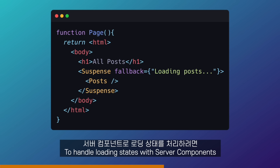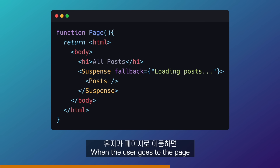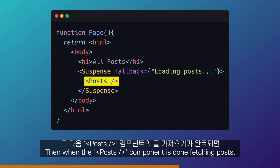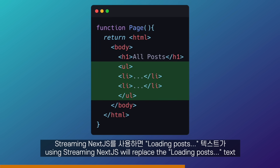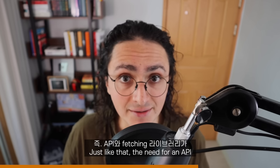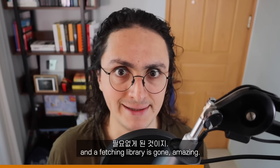To handle loading states with server components, we can use Suspense. When the user goes to the page, they will immediately see a UI with a loading post text. Then when the post component is done fetching, using streaming, Next.js will replace the loading post text with the resulting UI of the post component. Just like that, the need for an API and a fetching library is gone.